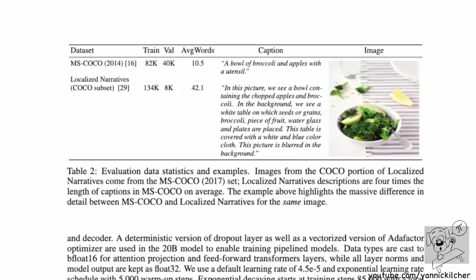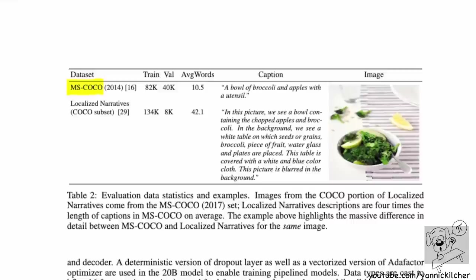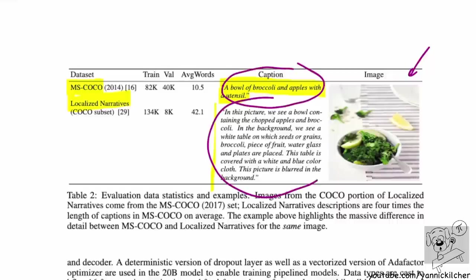They have three main datasets. One is MS COCO, which for a given image simply says something like 'a bowl of broccoli and apples with a utensil' — just a high-level image caption. The Localized Narratives dataset has much longer, more linguistically descriptive captions — not just what's in the image, but a description detailed enough that someone could recreate it.